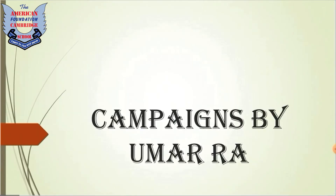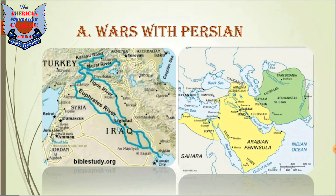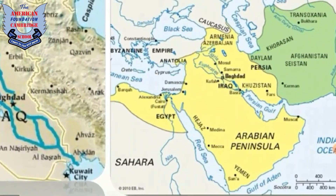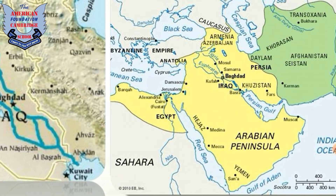Campaigns by Umar Razi Allahu Anhu. Firstly, we are going to learn his major campaigns with the Persian Empire. In the map you can analyze the situation of Persia. Its main regions were Iraq and the rivers Euphrates and Tigris, while on the left side were Damascus, Jerusalem, Egypt and the whole of the Byzantine Empire.